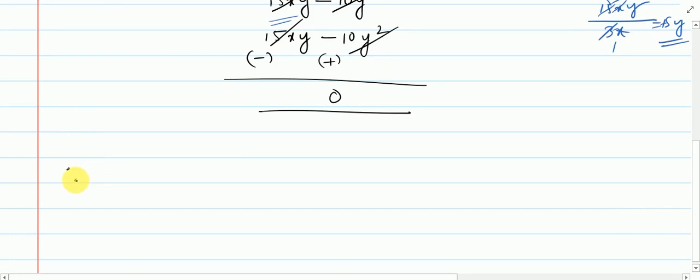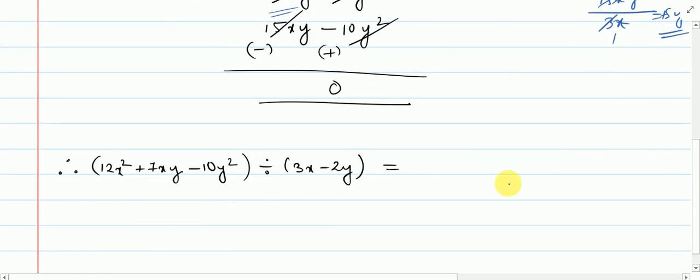Since remainder came 0, so we will write therefore 12x squared plus 7xy minus 10y squared divided by 3x minus 2y equals 4x plus 5y. So this is how we solve this type of question.